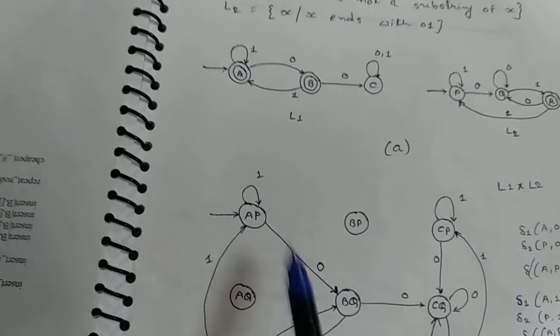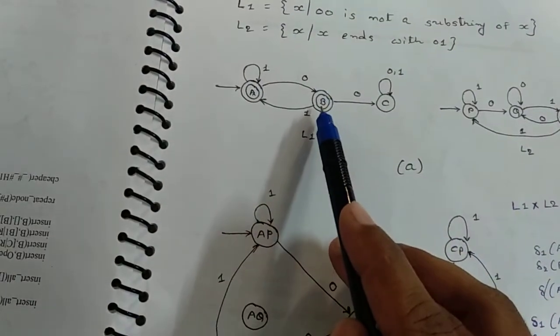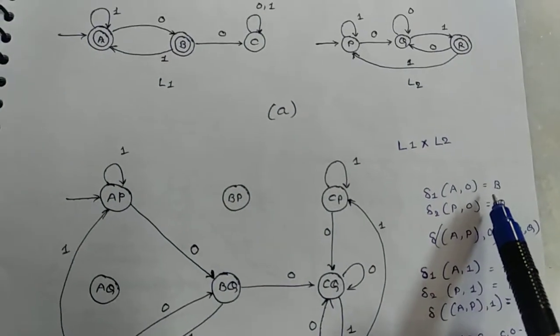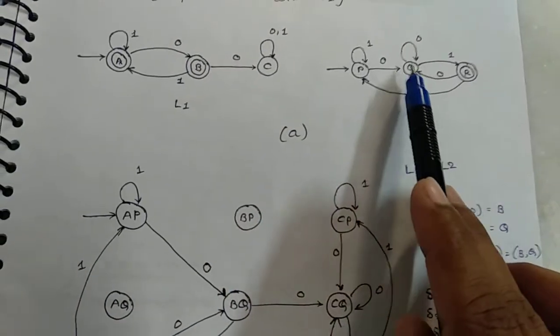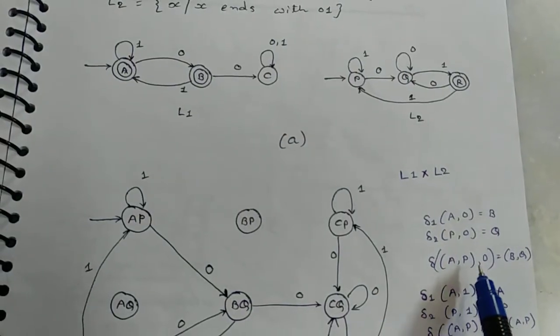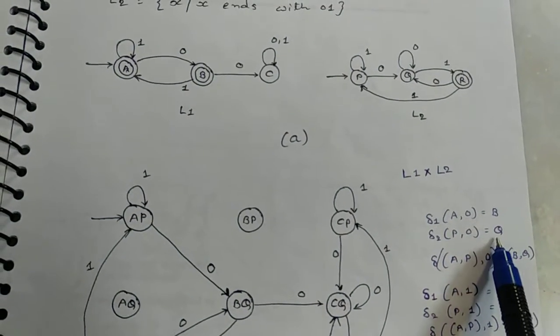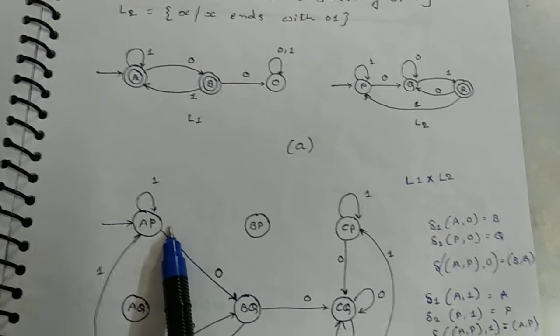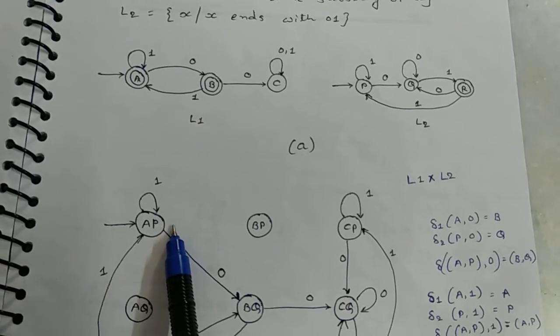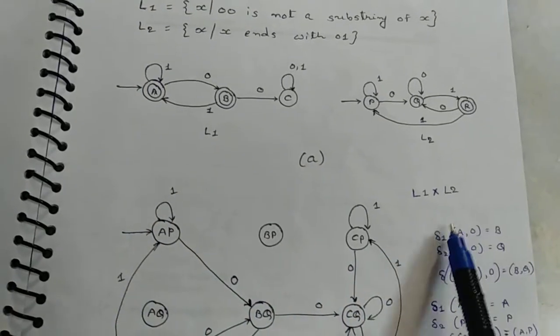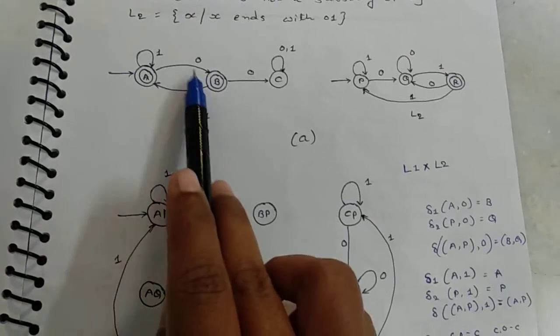Now, from A to 0, which state you reached? State B. Delta 1, A to 0, you reached at B. Same as P to 0, reach at Q. So delta from AP to 0, you reach at state BQ. Here, A and P states are combined, so first find input symbol for these states individually. First find A to 0, from A to 0, with state B.